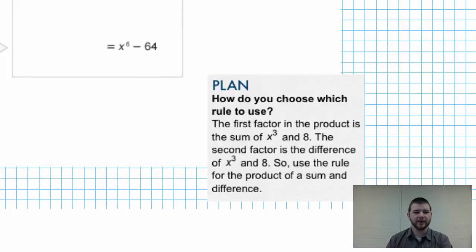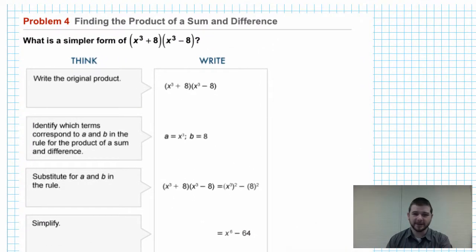Example problem number 4: Finding the product of a sum and difference. So here we're multiplying a sum and difference. The question is what is a simpler form of X cubed plus 8 times X cubed minus 8. Now this will result in a difference of squares, like we began discussing in the last example. I like the way this has lined out the steps for us - what we should think on the left hand side and what we should write on the right hand side. So this will kind of explain the algorithmic problem solving, the process that we use as we solve a problem like this.